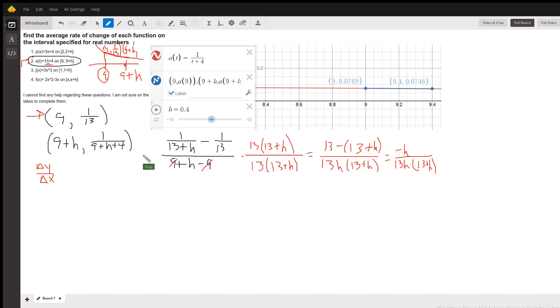So if we use the slope formula, y sub 2 minus y sub 1 over x sub 2 minus x sub 1, I could say here's the change in y. This y-coordinate minus this y-coordinate, 1 over (13 plus h) minus 1/13, all over the change in x, which is 9 plus h minus 9, or just h.